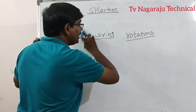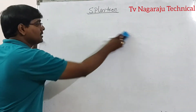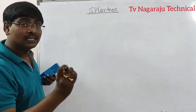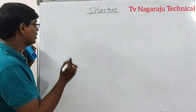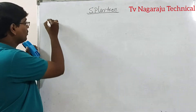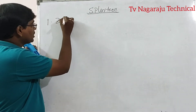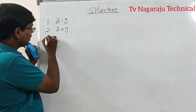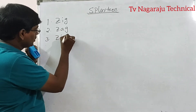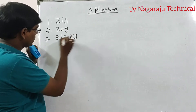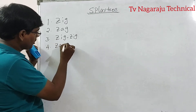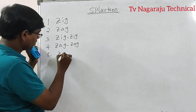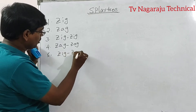The Splay Tree consists of six types of rotations for moving the recently accessed element to the root of the tree. The six rotations are: Zig rotation, Zag rotation, Zig-Zig rotation, Zag-Zag rotation, Zig-Zag rotation, and Zag-Zig rotation.